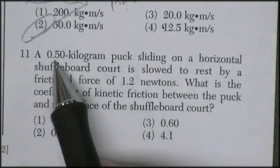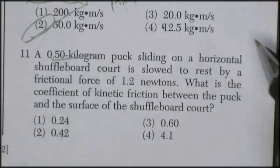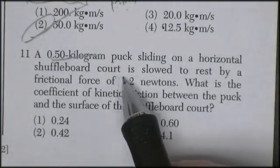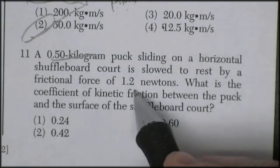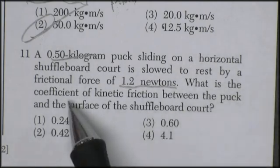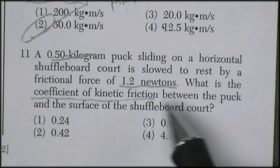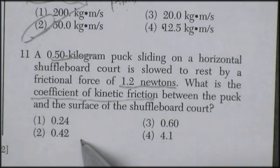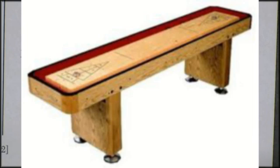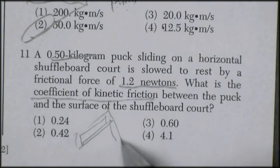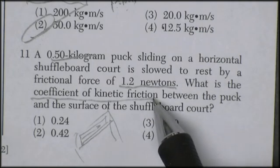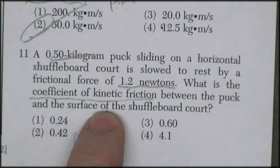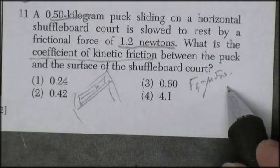Question 11. A 0.5 kilogram puck sliding down a horizontal shuffleboard court is slowed to rest by a frictional force of 1.2 newtons. What is the coefficient of kinetic friction between the puck and the surface of the shuffleboard? Shuffleboard. That's one of those games where they set up the long thing and then the little thing around it, you put powder on the table and then you try to hit the little targets, right? Isn't that what they're talking about? Sure, why not? I like coefficient of friction. Force of friction is mu force normal. As it turns out, you have to remember what the normal force is. Now, normal means perpendicular. You've got an object sitting on a table.